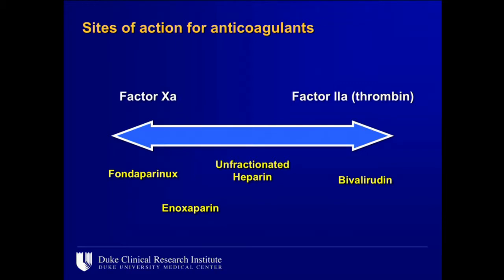I want to emphasize the sites of action for anticoagulants and what ACT actually measures. ACT — activated clotting time — reflects antithrombin therapy specifically. On one end of the spectrum is bivalirudin, a direct thrombin inhibitor. The ACT values with bivalirudin are very high. When I was a fellow during REPLACE-2, the first patient we gave bivalirudin to came back with an ACT of 400, and everybody panicked — until we realized that's how the drug works. It's directly inhibiting thrombin.